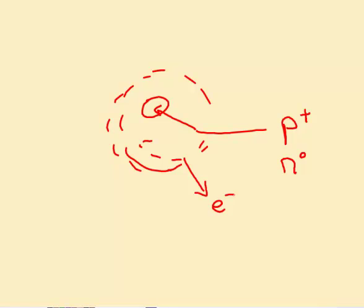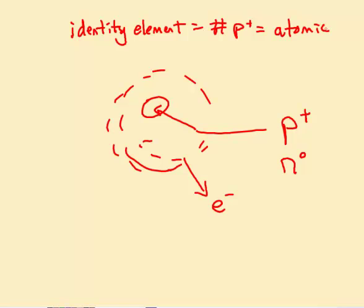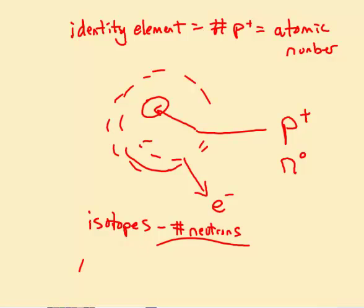The identity of an element is determined by the number of protons in the nucleus. What determines the identity of an element is the number of protons — that is called the atomic number. So the atomic number is the number of protons in the nucleus, and that's what tells us what element we have. If I have seven protons, I can refer to a periodic table and see that nitrogen is number seven, so nitrogen is what I have every time I have seven protons.